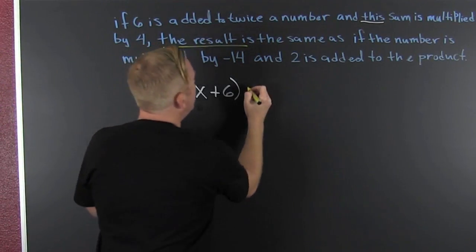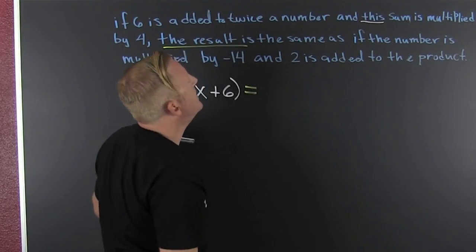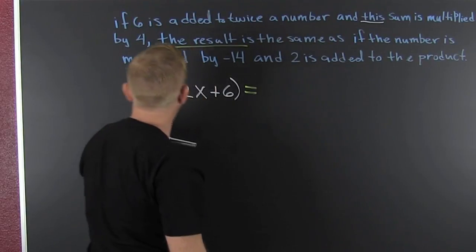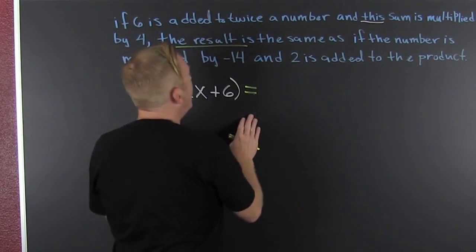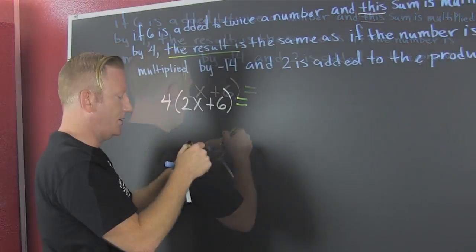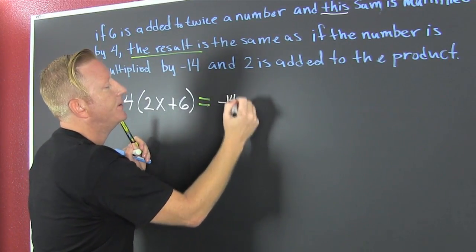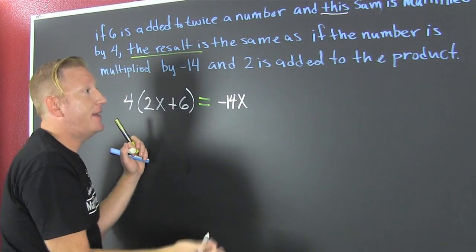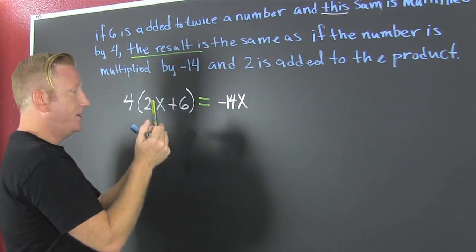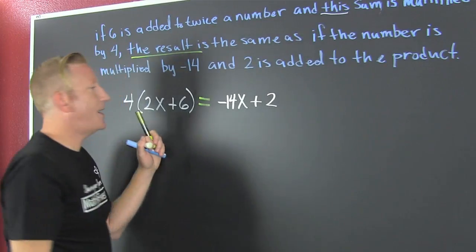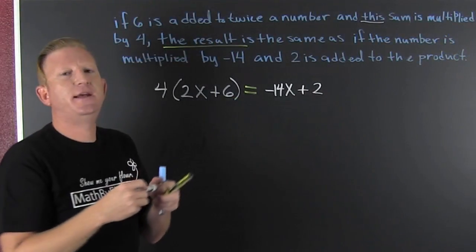Then we put that equal sign. That equal sign. Fine. The result is the same as if the number is multiplied by minus 14. Okay. So the number is multiplied by minus 14. And two is added to the product. And then two is added to that product. Now it's all linear.